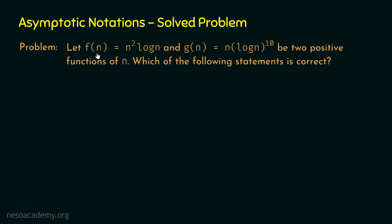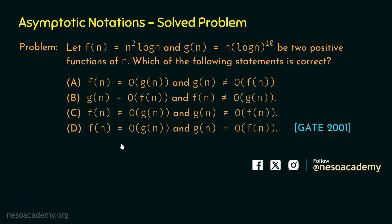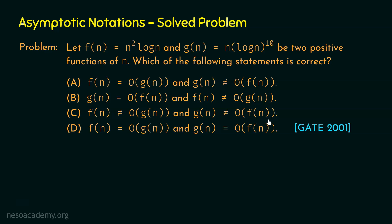The problem is: let f(n) = n² log n and g(n) = n × (log n)^10. These are positive functions of n. Which of the following statements is correct? Statement 1: f(n) = O(g(n)) and g(n) ≠ O(f(n)). Statement 2: g(n) = O(f(n)) and f(n) ≠ O(g(n)). Statement 3: f(n) ≠ O(g(n)) and g(n) ≠ O(f(n)). Statement 4: f(n) = O(g(n)) and g(n) = O(f(n)).